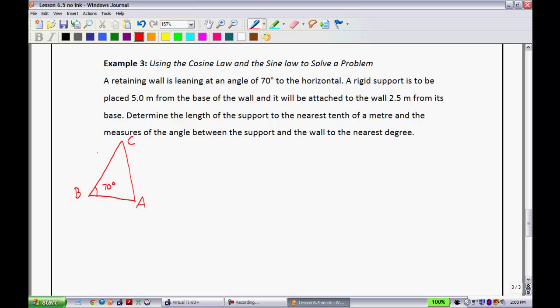The rigid support will be placed 5 meters from the base. So this is the rigid support right here, 5.0 meters. And then they say that rigid support is 5 meters from the base, and it will be attached from the wall 2.5 meters from its base. So I know that this side right here is going to be 2.5 meters. It is confusing this one just to set up the diagram, but once you get there you should be okay.